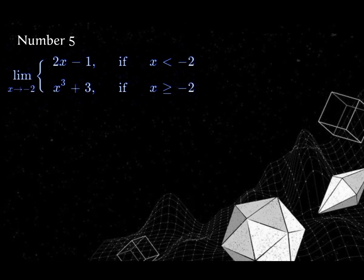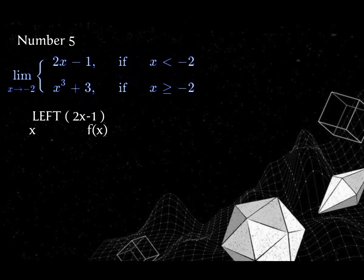Number 4: a piecewise function where f(x) equals 2x minus 1 if x is less than negative 2, and x cubed plus 3 if x is greater than or equal to negative 2, as x approaches negative 2. First, we're going to get the table of values from the left using 2x minus 1, with x values negative 3, negative 2.9, negative 2.5, and negative 2.01, because these values are less than negative 2.